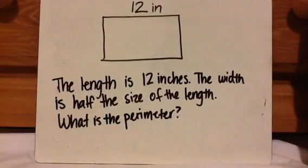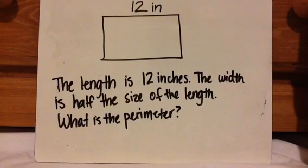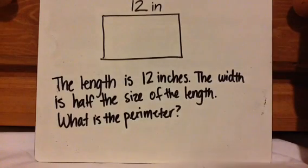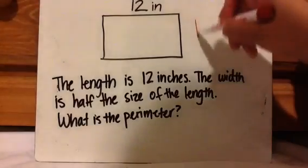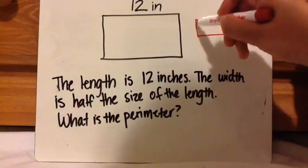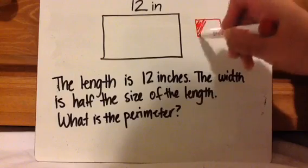Let's look at another kind of example where they give you the length but you have to find the width and you have to find the perimeter. So it says the length is 12 inches, which is labeled. The width is half the size of the length. What is the perimeter? So I've got to find the width. When it says half the size, half means divide by 2.